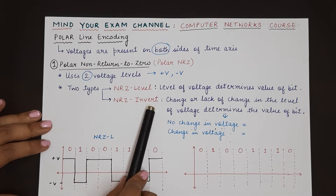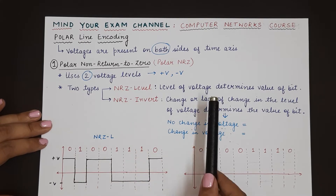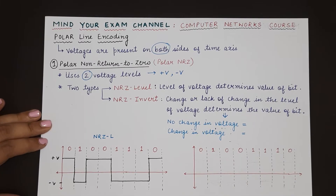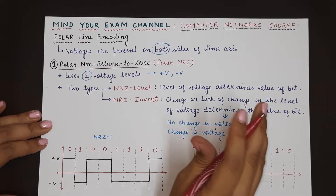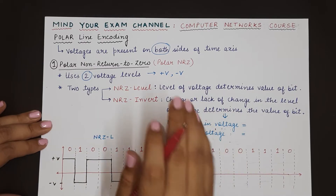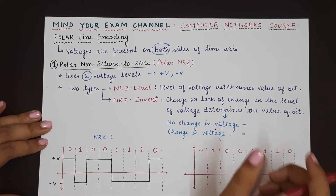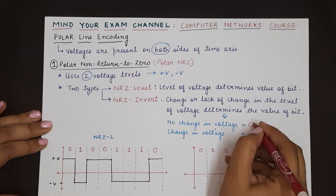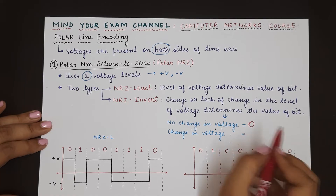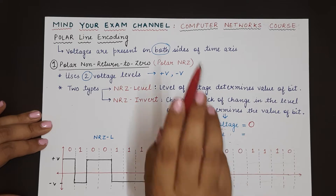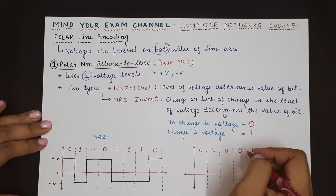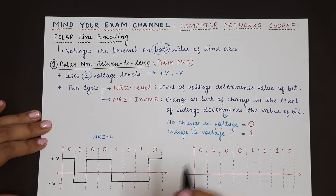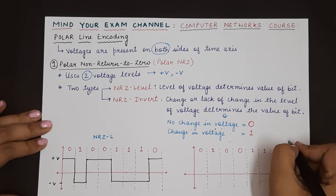In case of NRZ-I (NRZ invert), the change or lack of change in the level of voltage determines the value of the bit. If there is no change in voltage — meaning the voltage was positive previously and remains positive in the next time interval — then the bit being represented is 0. Otherwise, if the voltage changes from positive to negative or negative to positive, then the bit being represented is 1.